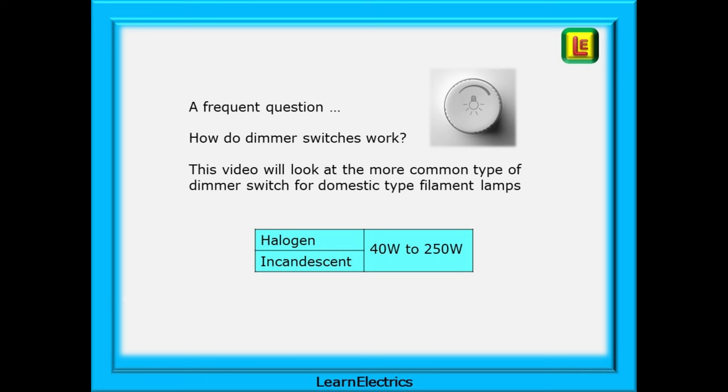In this video we'll start by looking at the more common type of dimmer switch that is used with standard domestic filament lamps. The type of dimmer switch shown in this video would be normally suitable for halogen and incandescent lamps with a load of between 40 watts and 250 watts.